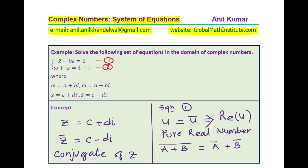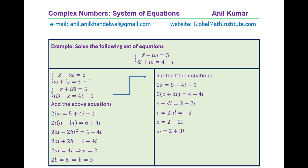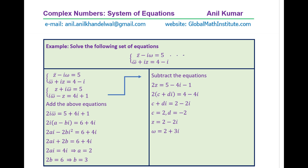Now let's begin the solution. We have: conjugate of Z minus i·Omega equals 5, and conjugate of Omega plus i·Z equals 4 minus i. Since the right-hand side of equation one is purely real, the imaginary part is zero. This means: Z minus i·Omega equals the conjugate of (Z minus i·Omega). That is the property we're going to use.